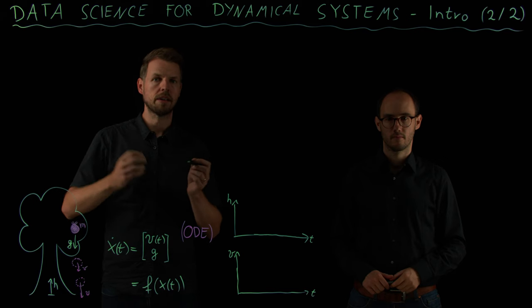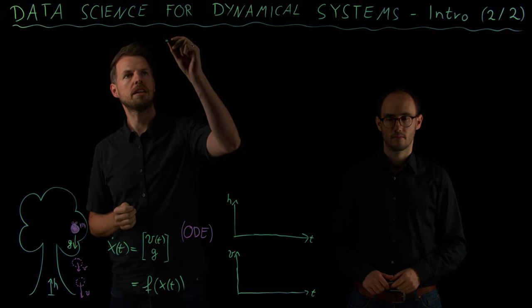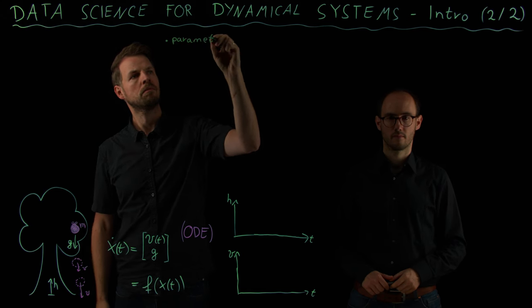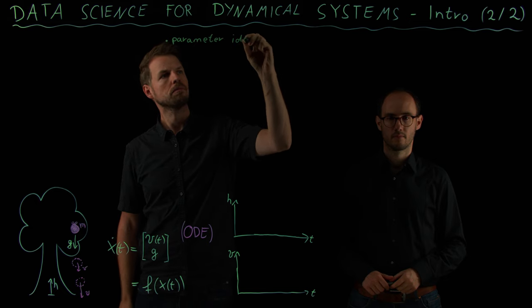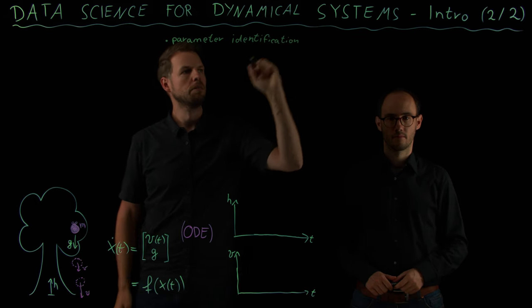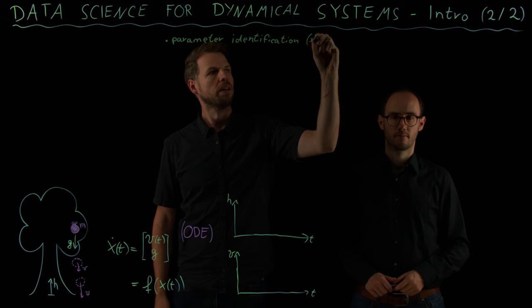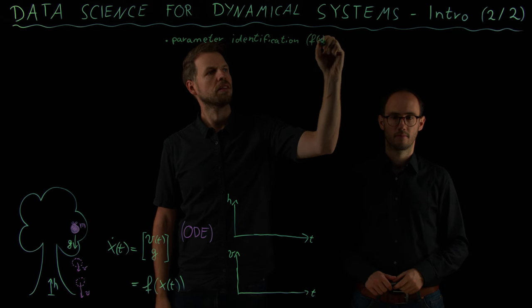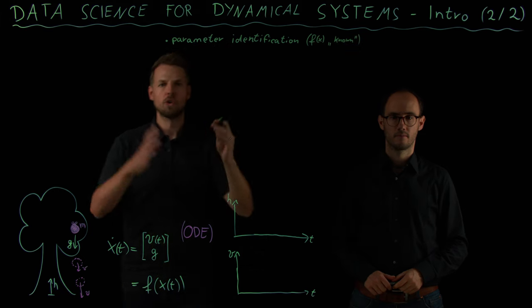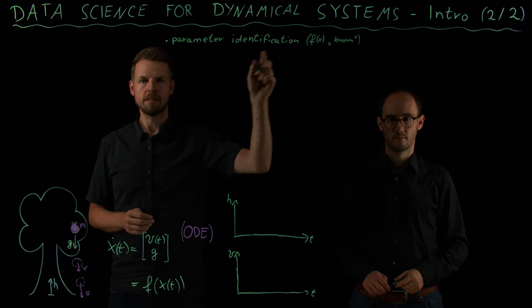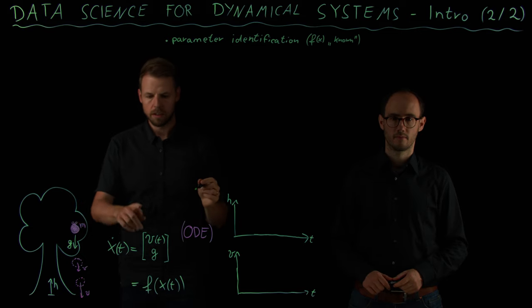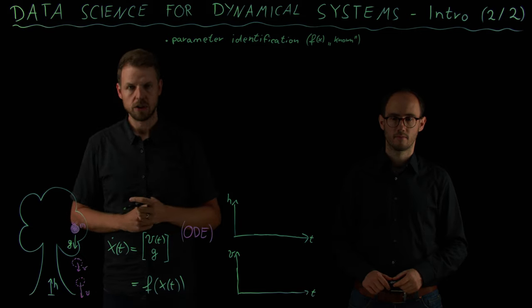Part one or point one that may occur is the question of parameter identification. This means that our right hand side f of x is known, and what I mean by known is that the structure of our right hand side may be known, but maybe some parts are not known, in this case parameters like the gravitational constant g.